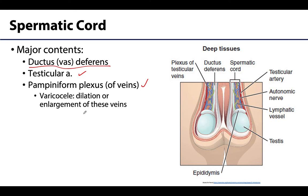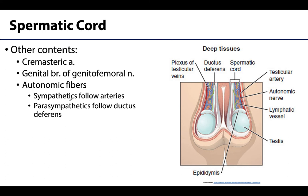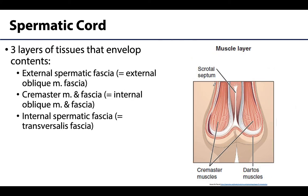Occasionally these veins can become enlarged or dilated, and these are referred to as a varicocele. Other smaller contents of the spermatic cord include the cremasteric artery, which supplies the cremaster muscle surrounding the cord, the genital branch of the genitofemoral nerve, sympathetic fibers that follow the arteries, parasympathetic fibers that follow the ductus deferens, and lymphatics. The layers surrounding the spermatic cord are homologous with the anterolateral abdominal wall: the external spermatic fascia, the cremaster muscle and fascia, and the internal spermatic fascia correspond to their respective abdominal wall layers.